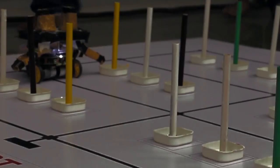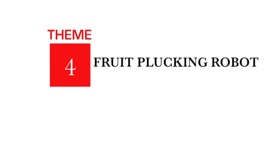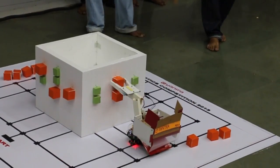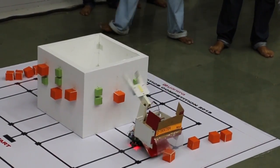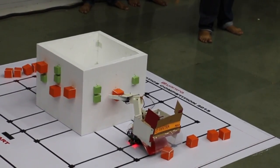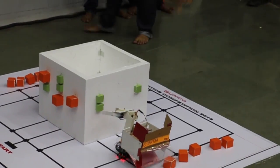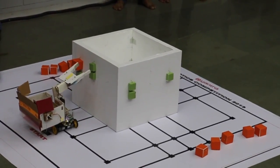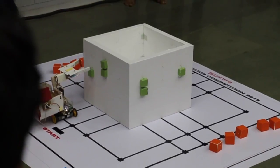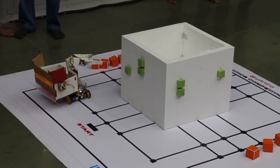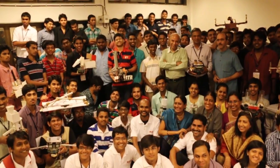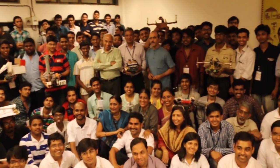The harvesting robot must pluck ripe tomatoes while leaving behind unripe ones. The entire skirt mechanism, the gripper, and everything else has been designed by the students. They are only allowed to drop tomatoes in designated areas, so the robot pulls the skirt in at one point and then releases in the correct part of the arena. Students have learned very practical skills: working as a team, solving a problem, building a good algorithm, and coming up with a fast solution — learning a lot more than just engineering.